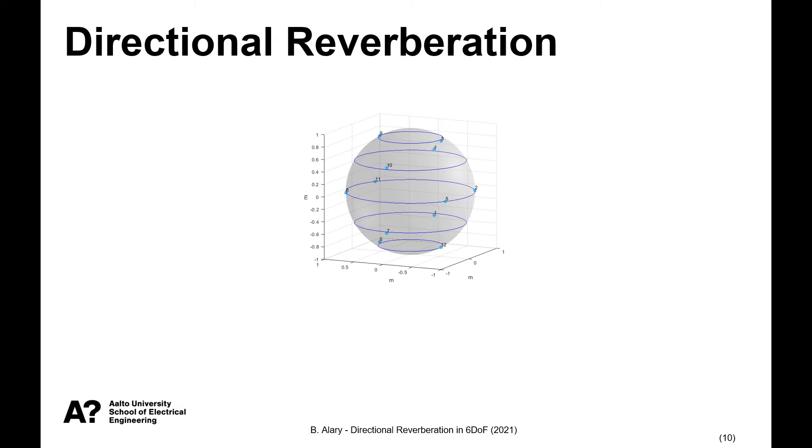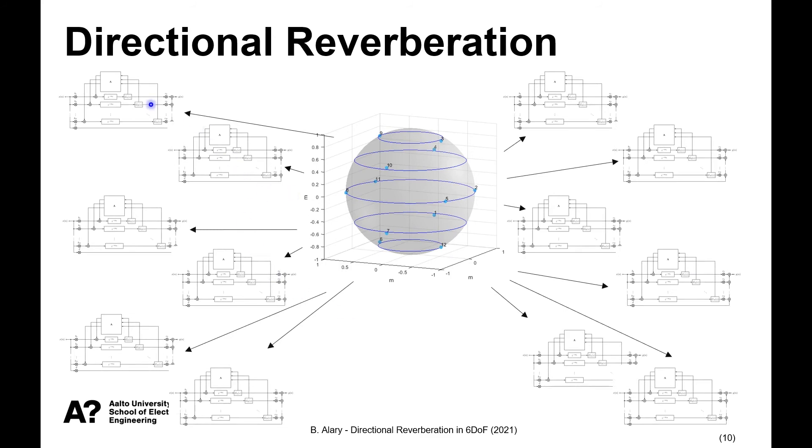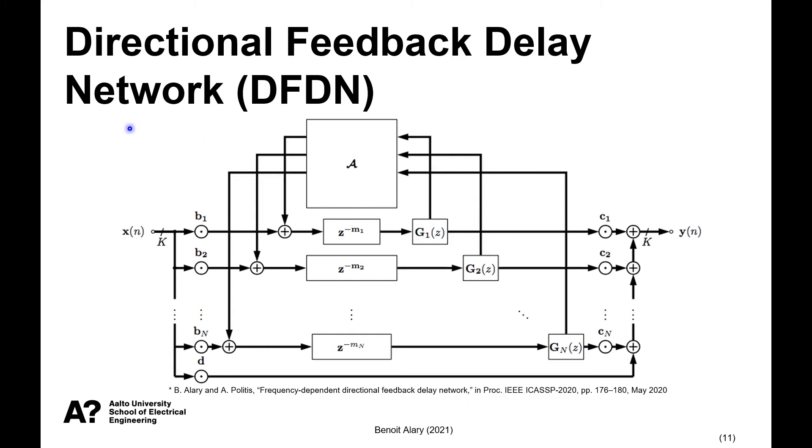So we can use a normal FDN to output two different channels, but they will all share the same decay characteristics. So another approach is to consider a sound field that we would sample from different directions. Here we have 12 points distributed, and each unique direction will have their own reverberator and decay characteristics. And together they can be combined into a larger structure called the Directional Feedback Delay Network, the DFDN. So it's quite similar. The main difference is that the signal flow lines are now thick to represent multi-channel delay lines, and there's K channels, one for each direction that we want to reproduce.